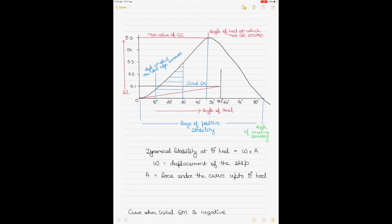The next thing you can notice is the angle of heel at which the maximum GZ occurs. As you can see on the graph, it's happening at about 48 degrees — that is the angle of heel at which the maximum GZ occurs.